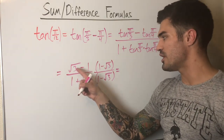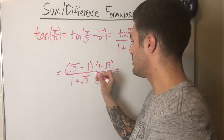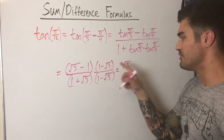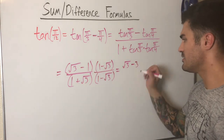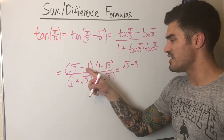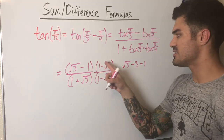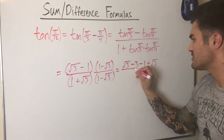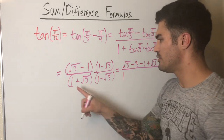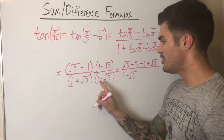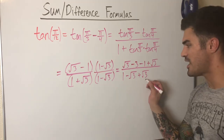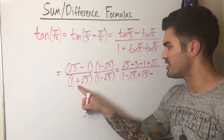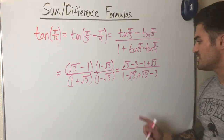Foiling the numerator: (root 3 − 1)(1 − root 3). That gives root 3 · 1 = root 3, then root 3 · (−root 3) = −3, then −1 · 1 = −1, then −1 · (−root 3) = +root 3. So the numerator is root 3 − 3 − 1 + root 3. The denominator is (1 + root 3)(1 − root 3) = 1 − 3 = −2, because the middle terms cancel.